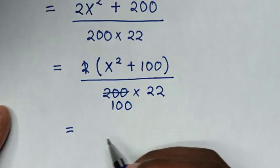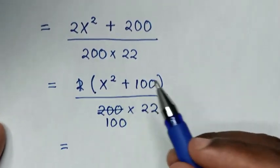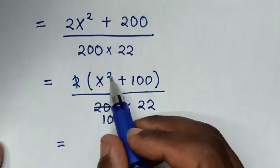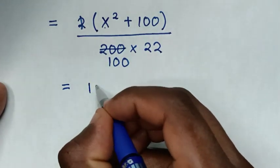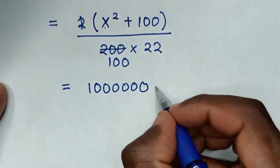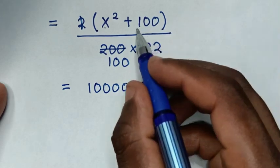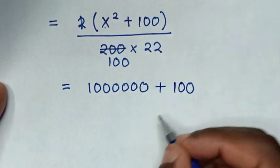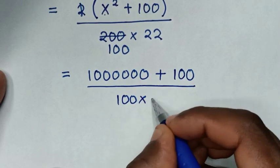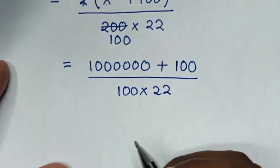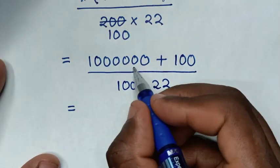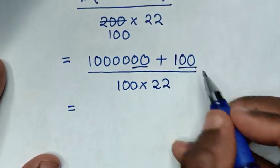It will be equal to: from here, x square — x is 1000 — so it will be 1000 square, which is 1 million, 1 with 6 zeros, then plus 100, then over 100 times 22. Then, we take 100 with 2 zeros out of the bracket.